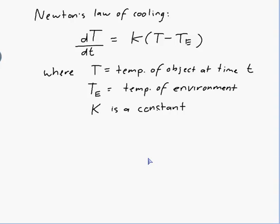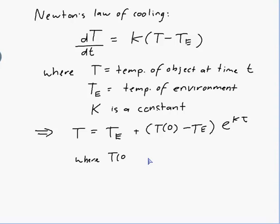My notes give me the solution, so let's just use that. This implies T equals Tₑ plus T(0) minus Tₑ, times e to the kt, where T(0) is the temperature of the object at time t equals 0. All I need to do is substitute everything into that formula — I just need to figure out what each value is.